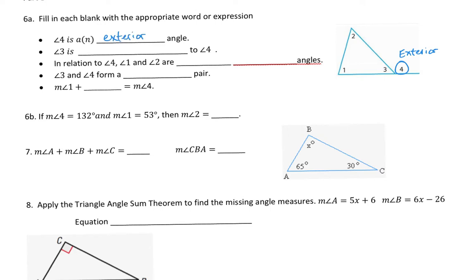Angle 3 is blank to angle 4. Well, angle 3 is next to angle 4, so the best answer would be adjacent. The word adjacent means next to, and that's what that is. It's adjacent.